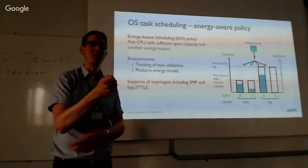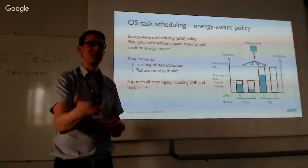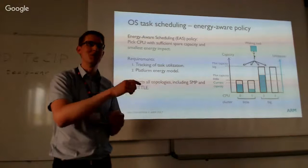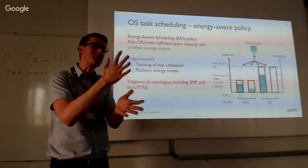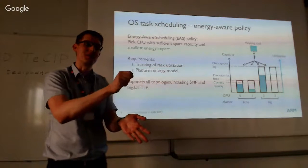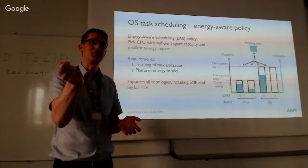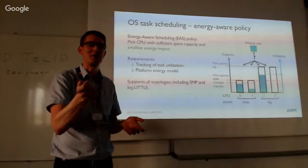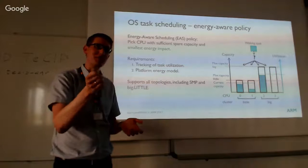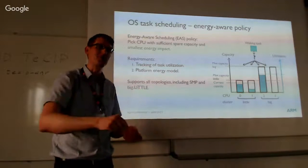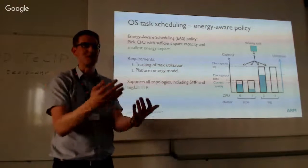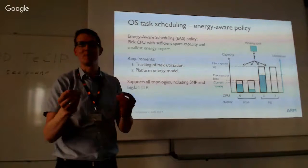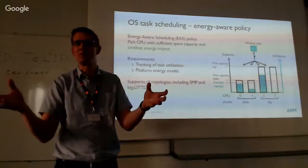We need to predict the outcome of a scheduling decision. If we put a task on CPU 1 instead of CPU 2, is that better or worse for energy? We can't figure that out from historical power consumption alone — the only way is to estimate how much power this task would consume on a given CPU together with all the other tasks, so we can compare different load distribution scenarios.